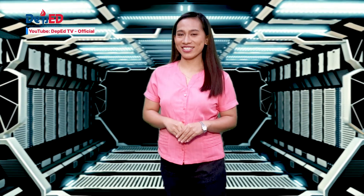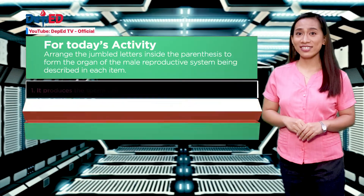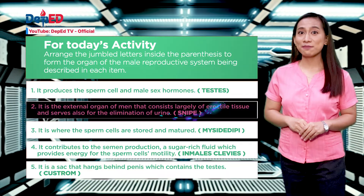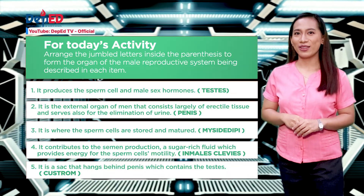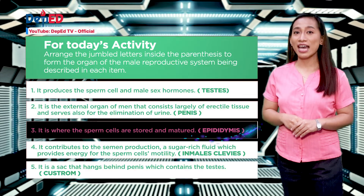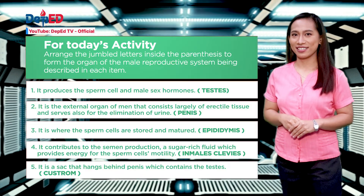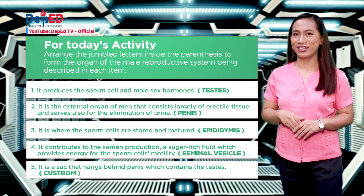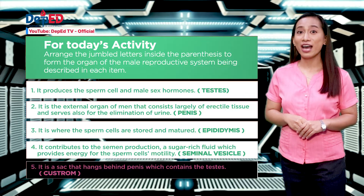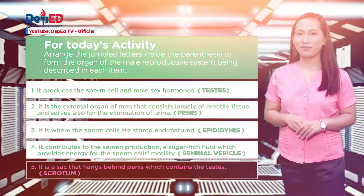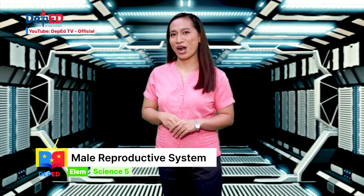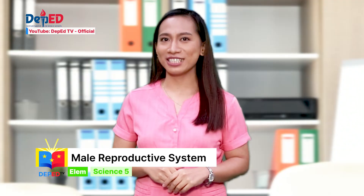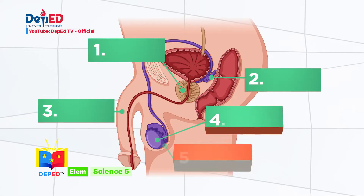Let's check your answers. Number 1: The correct answer is testis. Number 2: If your answer is penis, you are correct. Number 3: The correct answer is epididymis. Number 4: If your answer is seminal vesicle, that's another point for you. Number 5: The correct answer is scrotum. Good job, learners! That's a 5-star work. Now for this part, label the parts of the male reproductive system. You have 30 seconds to do this activity. Ready?